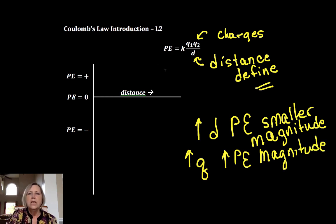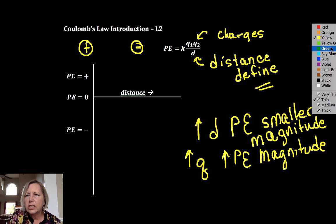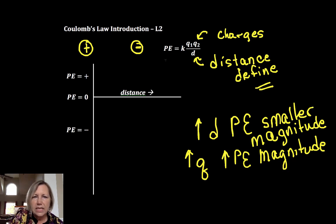So if I have two charged particles, if I have a positive particle and a negative particle, they're going to be attracted to one another. And you notice that when we have attraction, that the potential energy for attraction, attractive forces, is going to be a negative value.